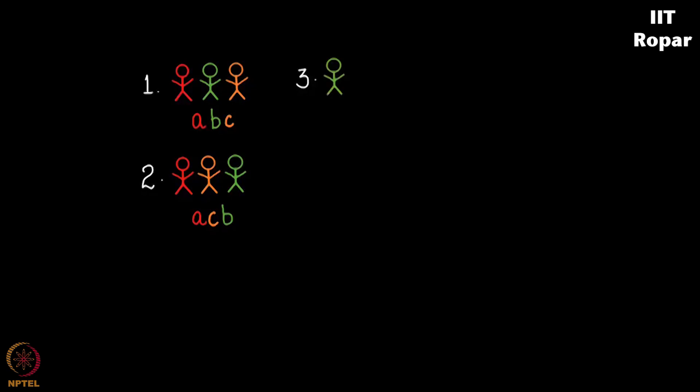And then let's say B in the first place, A and C in the second and third place. Next again B as it is and A, C swapped. Then finally C here, A, B here, and the last option would be C, B, A.